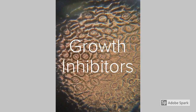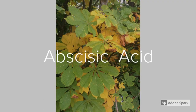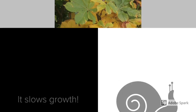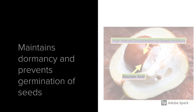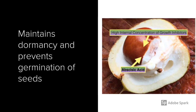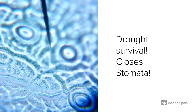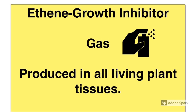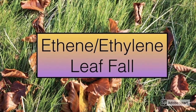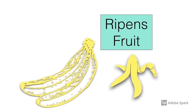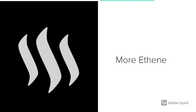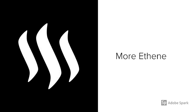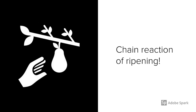You also need to know more detail about growth inhibitors. One very common growth inhibitor is abscisic acid — it slows growth. Abscisic acid in seeds is responsible for maintaining their dormancy and preventing germination. It's also key to helping plants survive drought conditions because it causes the stomata to close, which involves the guard cells. The other growth inhibitor, found as a gas, is ethene. Ethene is responsible for leaf fall and also for ripening fruit. Ethene will also stimulate the production of more ethene, causing a chain reaction of ripening — which is how many fruits can all ripen over just a few days.